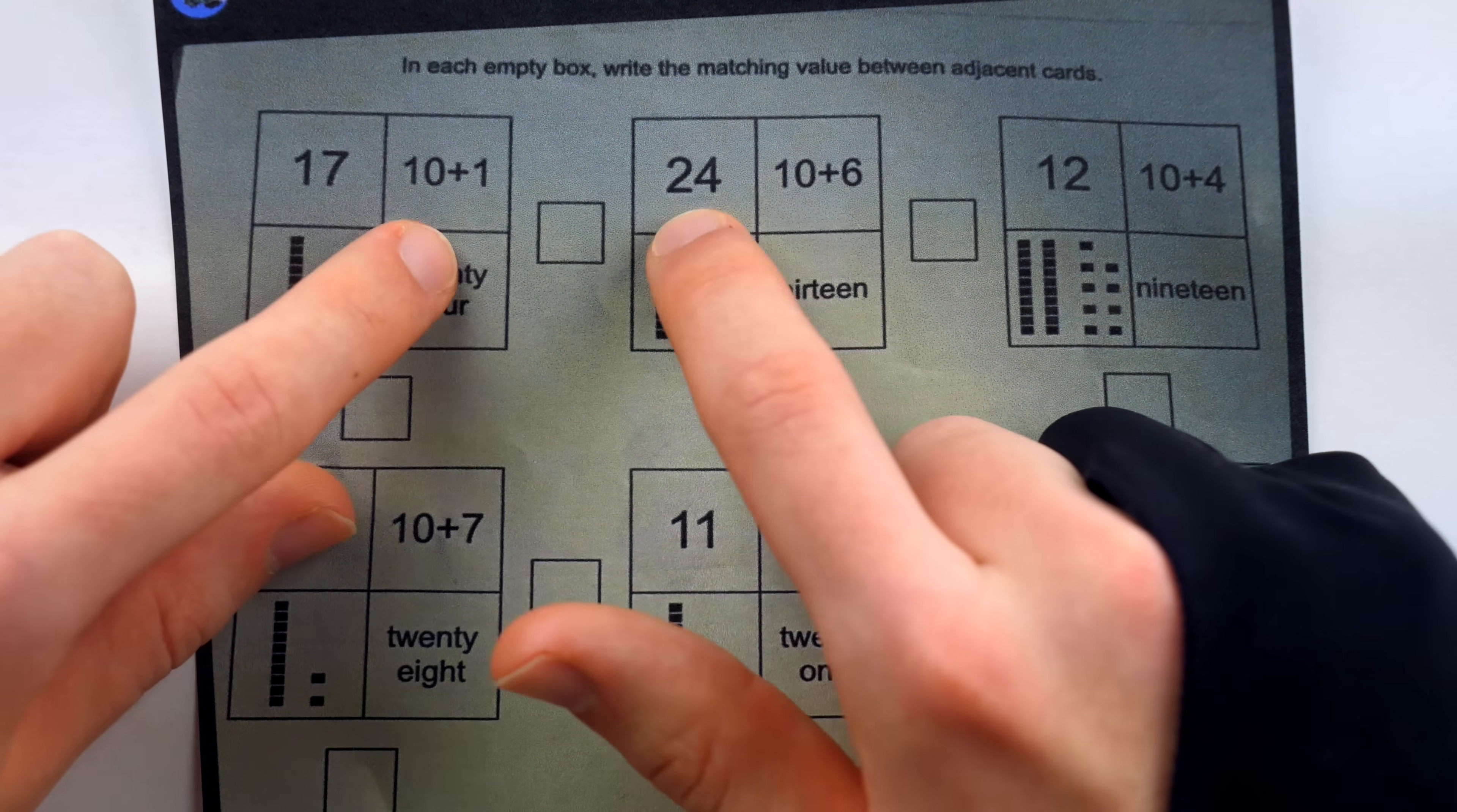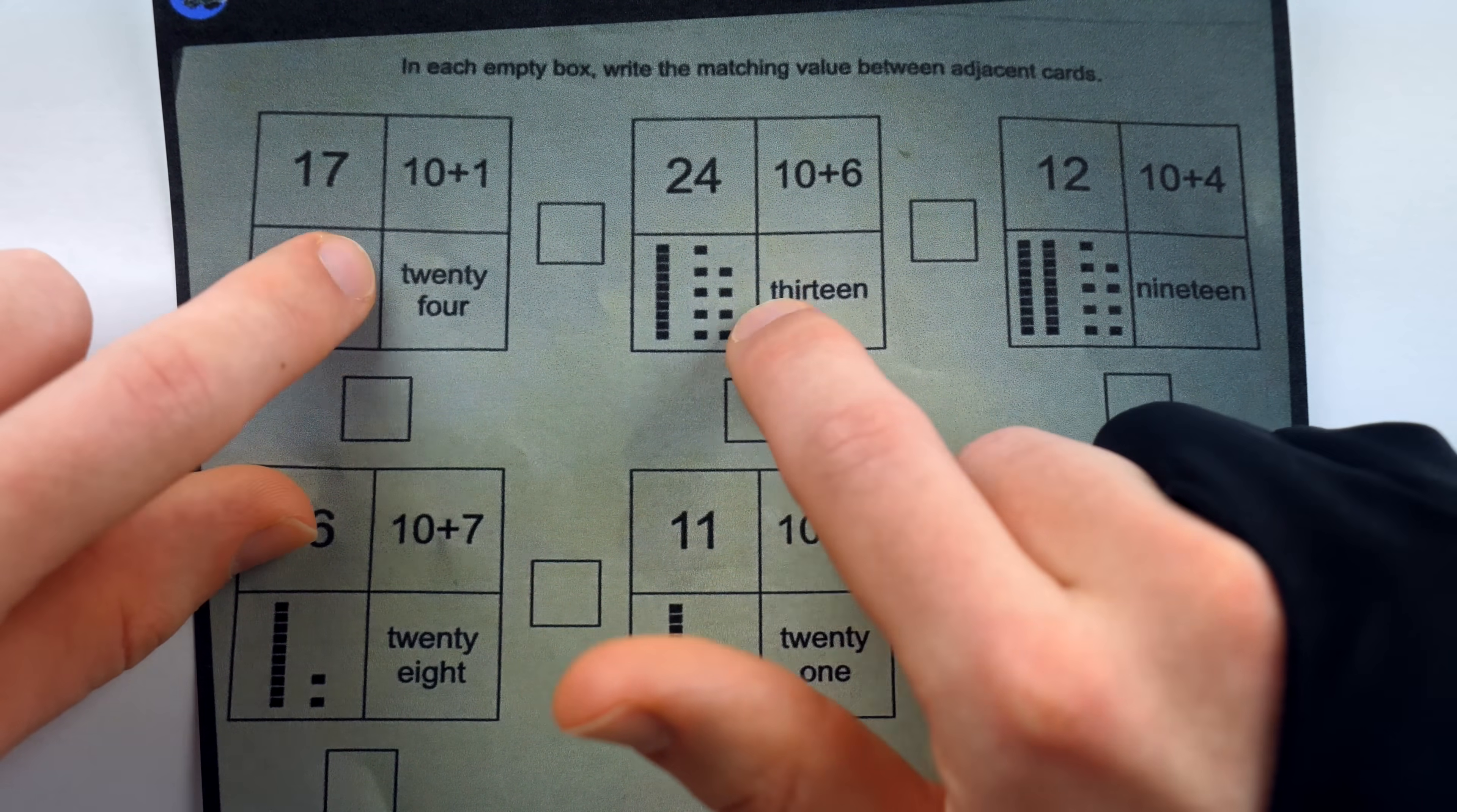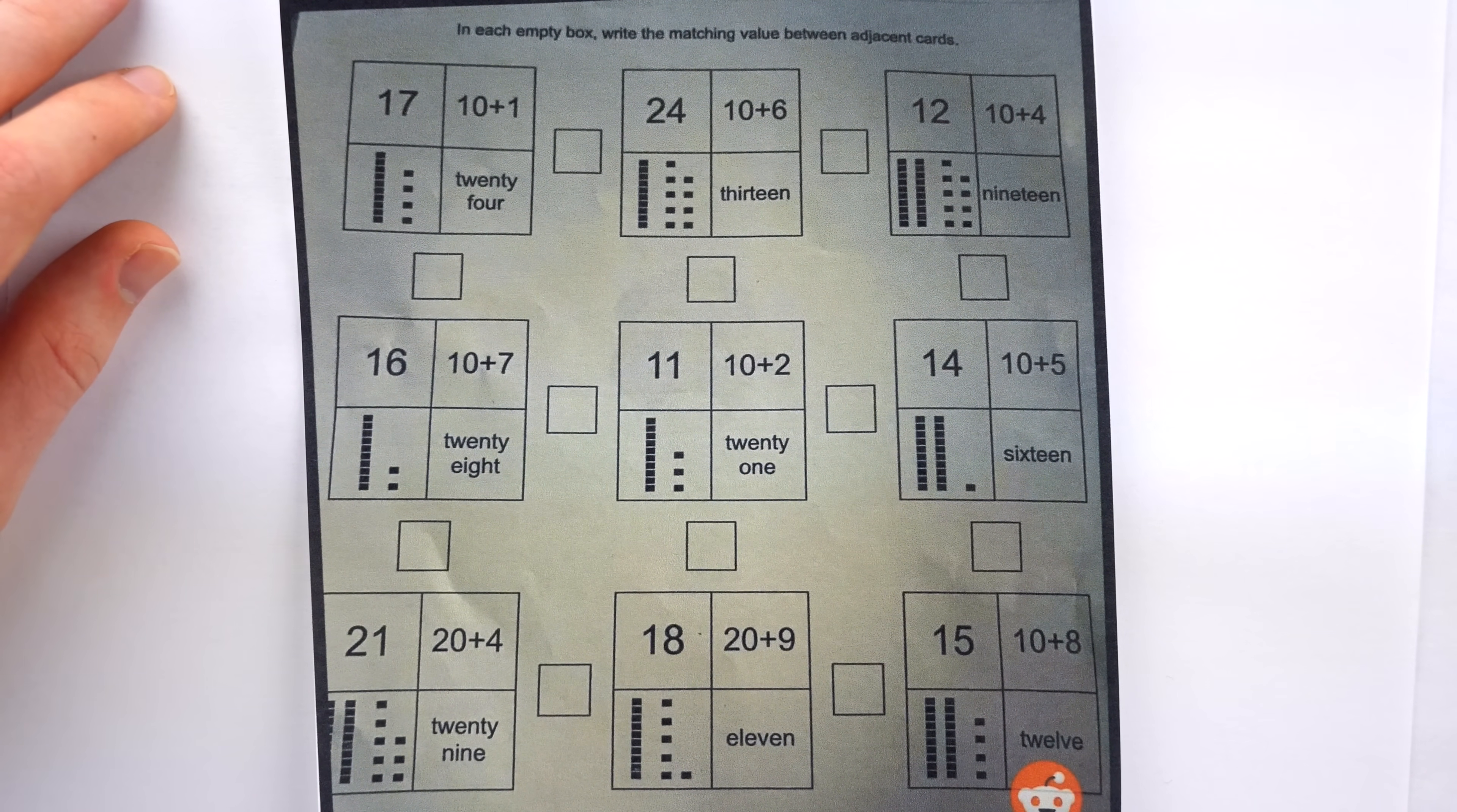And of course, every two adjacent boxes have an empty space between them, where you're supposed to write the number that the two boxes have in common, regardless of representation. Hopefully, the instructions are clear. So here's one more zoomed out look if you wanted to go through and figure each of these out yourself.